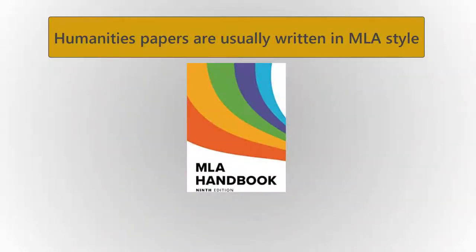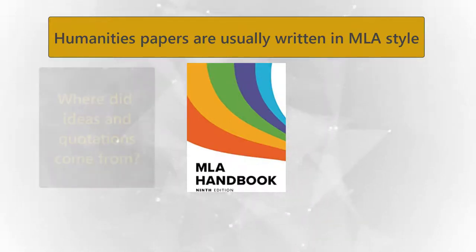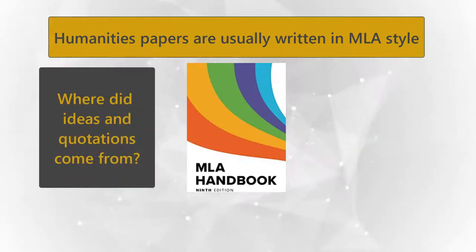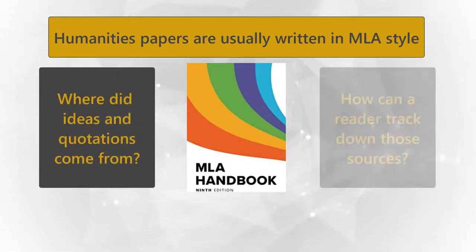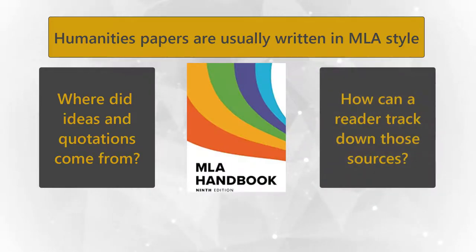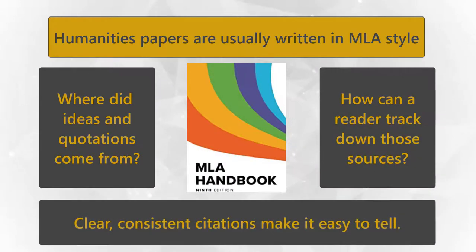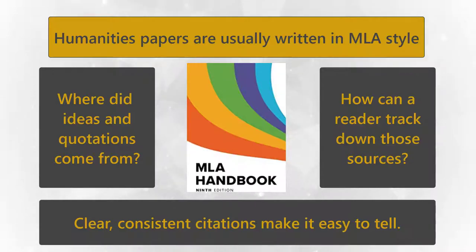A paper for a humanities class, like a literature class, will usually need to be written in MLA style. It's important for your audience to be able to understand where you got your ideas and quotations, and for them to easily find those sources in order to read them themselves. Therefore, you need to cite your sources in a clear and consistent manner. Let's take a look at how to use citations in MLA style.